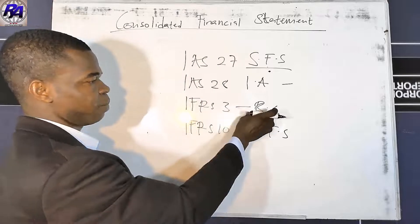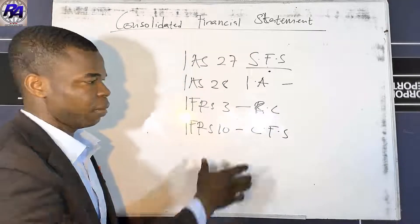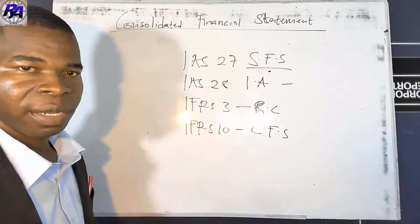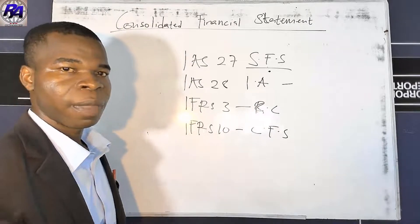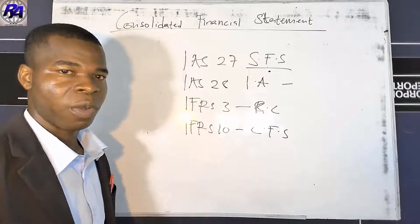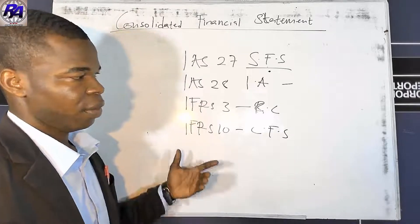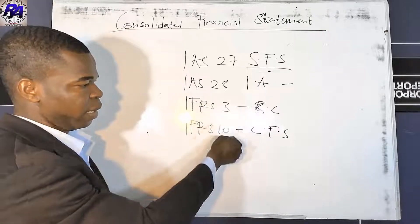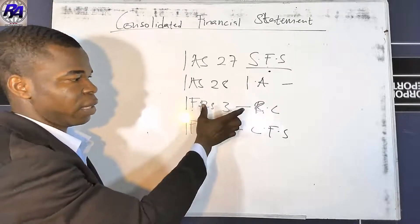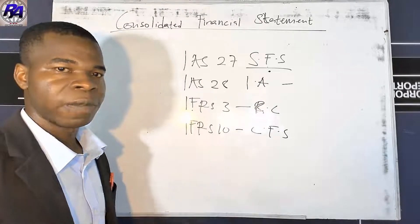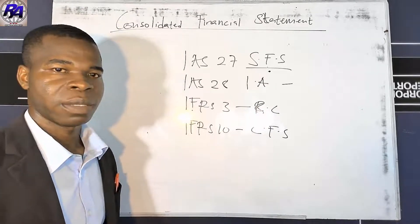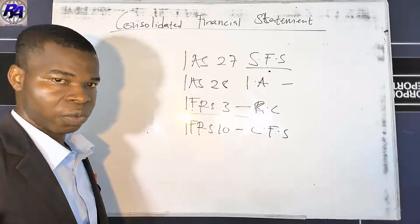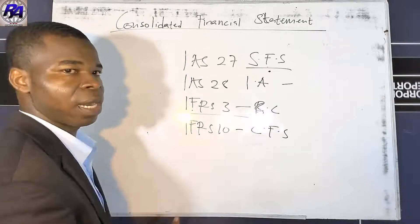IFRS 3 on business combinations gives guidelines on how to recognize a business combination, the identification of the acquirer or parent, the determination of the acquisition date, and how to measure goodwill. It complements IFRS 10, and together they cover the consolidated financial statement process. Remember: IFRS 3 does not prescribe how to consolidate, but IFRS 10 does.